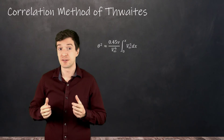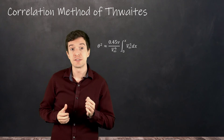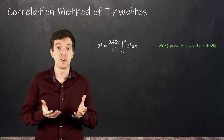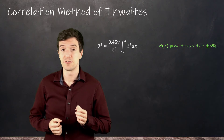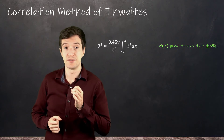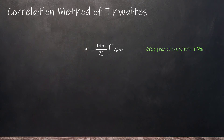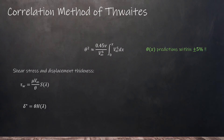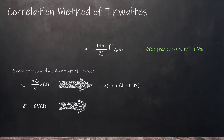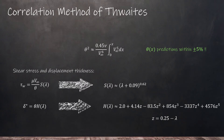The final quadratic relation for the momentum thickness gives us an accurate prediction of the data: within five percent for favorable or mild adverse pressure gradients, and within fifteen percent near separation points. We can also estimate the shear stress and the displacement thickness once we know the momentum thickness, using a curve fit for the shear function and a polynomial form for the shape factor function.